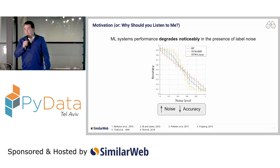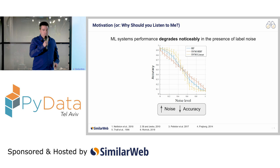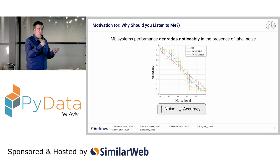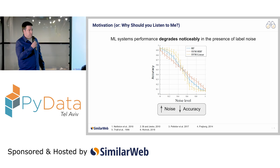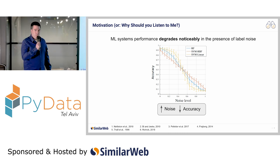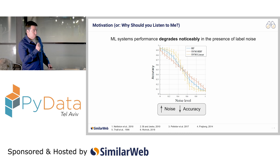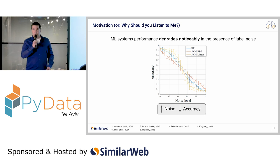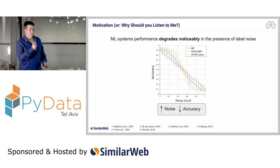Researchers have shown that label noise can deteriorate the overall performance of machine learning models. This occurs since label noise alters, at least to some extent, the relationship between the measured output and the features. You can see on screen an example in which we tested the accuracy of three different classifiers — a random forest, an SVM with an RBF kernel, and an SVM with a linear kernel — as a function of percent of label noise in the training data. Although they all show a different pattern, all show degradation in performance as label noise increases. You will get the answer as to why by the end of this talk.